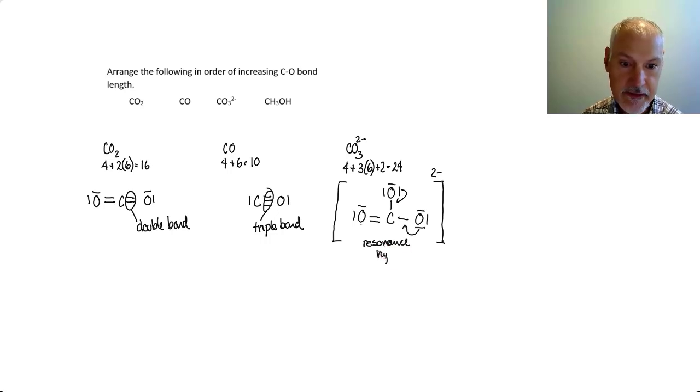So let's take a look at the resonance hybrid that would form here. Carbon, oxygens. The double bond could have existed here, here, or here. And the lone pairs. I'll just complete them. Here. And two minus.